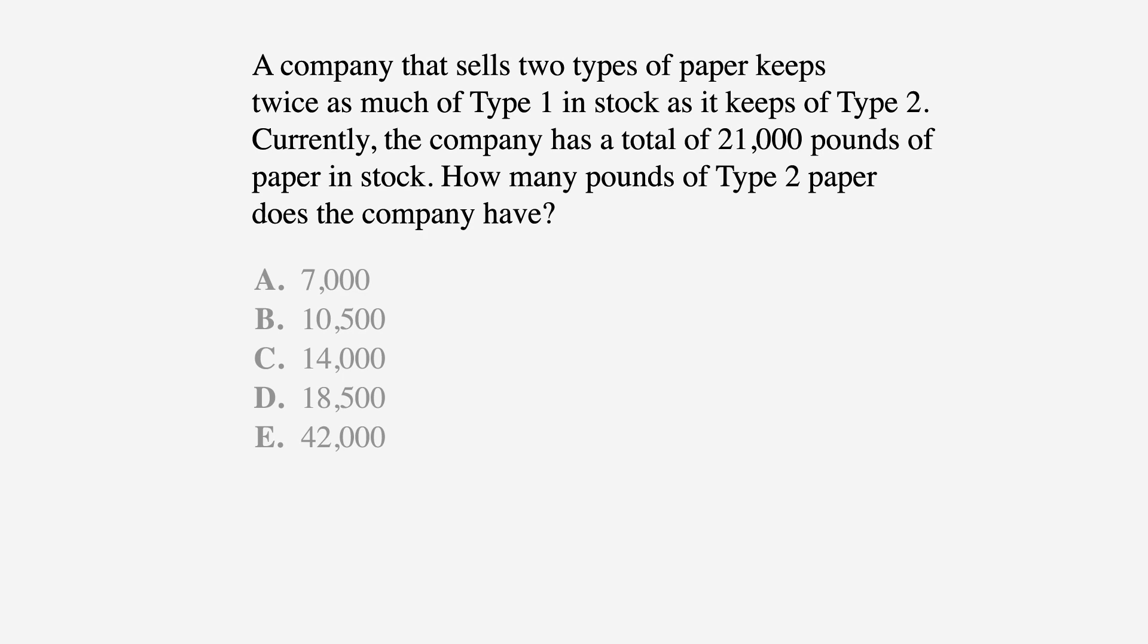How many pounds of Type 2 paper does the company have? Our answer choices are A, 7,000, B, 10,500, C, 14,000, D, 18,500, and E, 42,000.